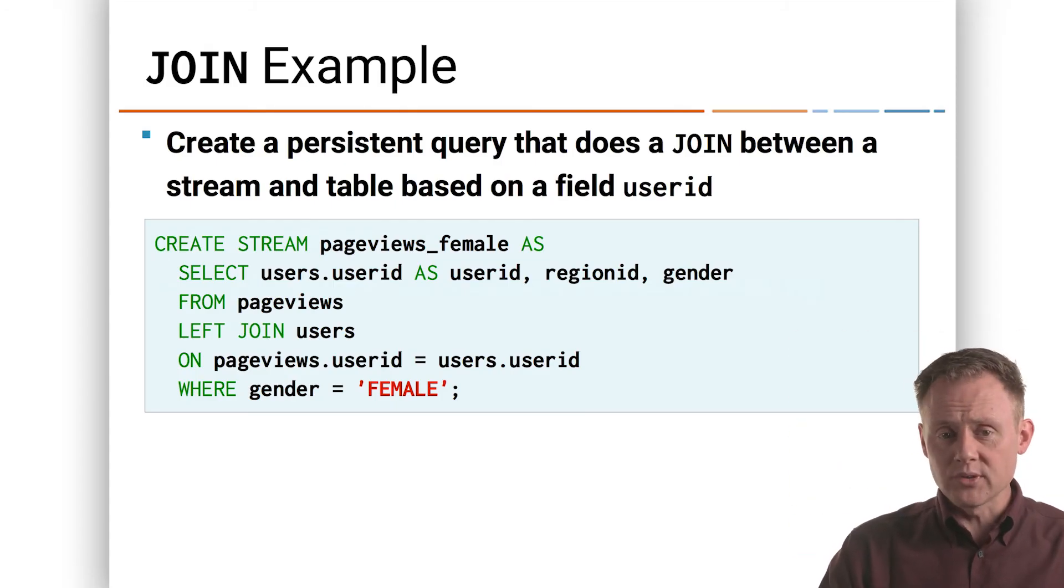So here, this is creating a new persistent query called page views female, create stream, page views female as, and then there's a select. So let's walk through the select a line at a time. We are selecting a user ID from the users table.